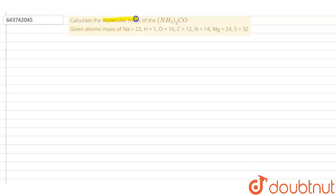Calculate the molecular mass of NH2 whole twice CO. That is the given compound is urea.